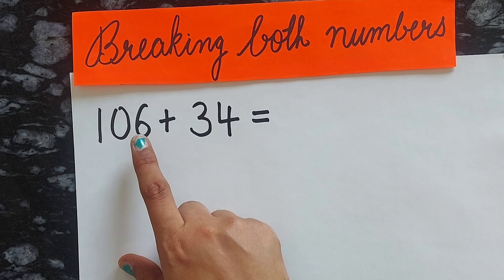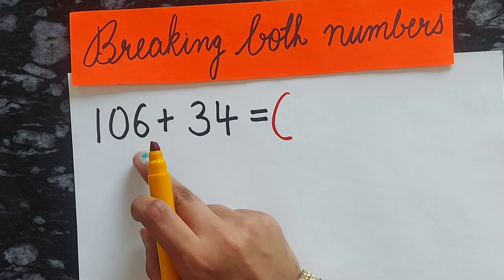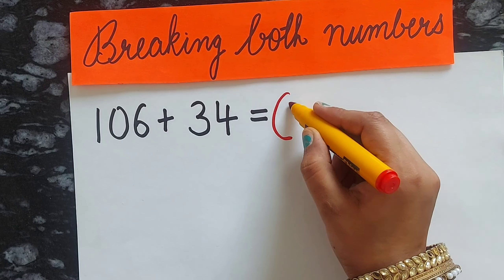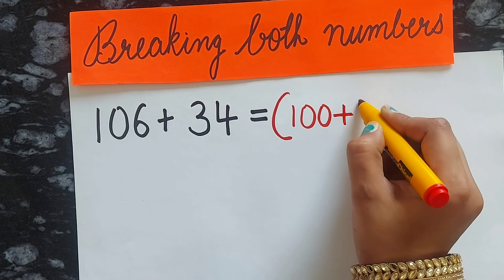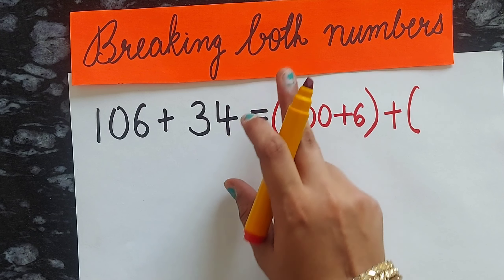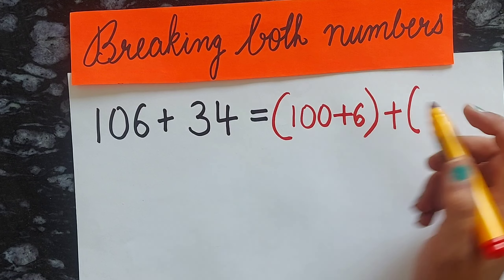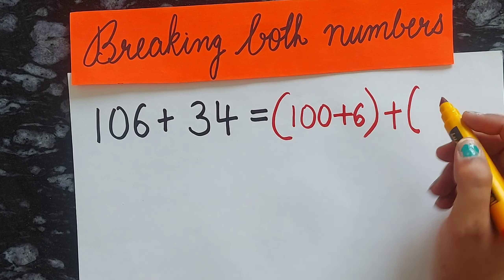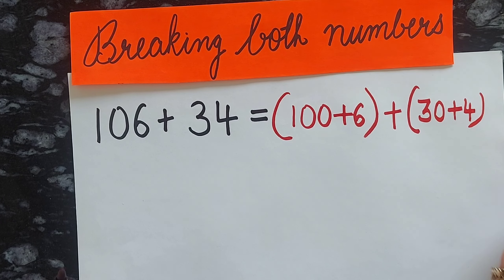The first number is 106. You will draw a bracket and break 106 into 100 plus 6. Then put the addition sign. The second number is 34, and we will break this also — it becomes 30 plus 4.